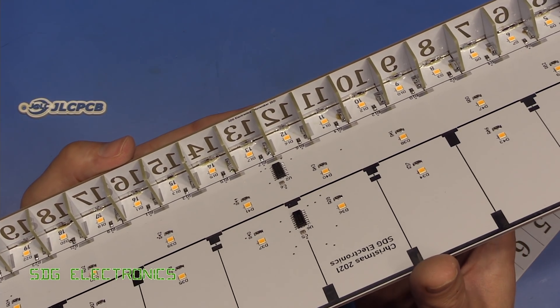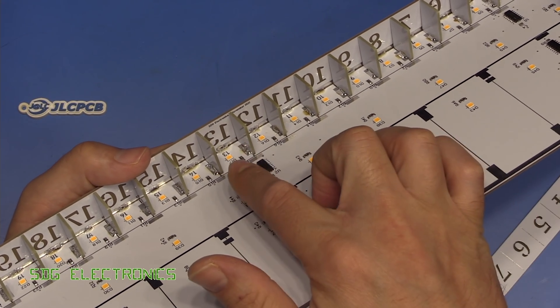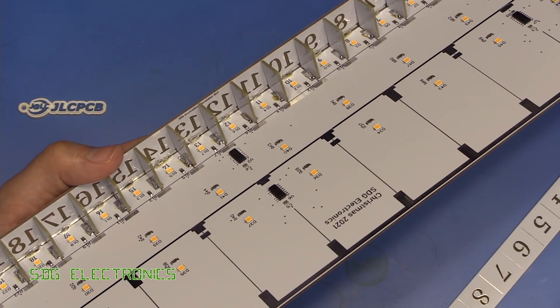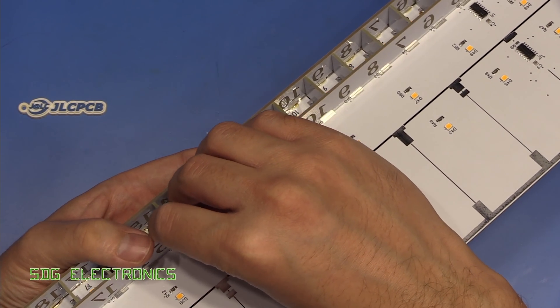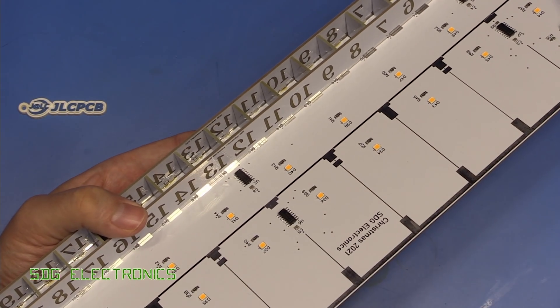That's all of those dividers soldered into place and that should really help with stopping the light bleeding to the adjacent numbers. The next thing to do is to mount another one of these strips on the back here and that will just stop the light shining out of the back.